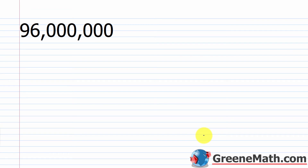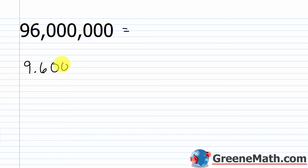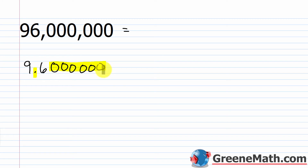For example, 96 million written in scientific notation: the first non-zero digit is 9, so the decimal goes after it — giving 9.6. The trailing zeros after the decimal don't add value and can be removed.